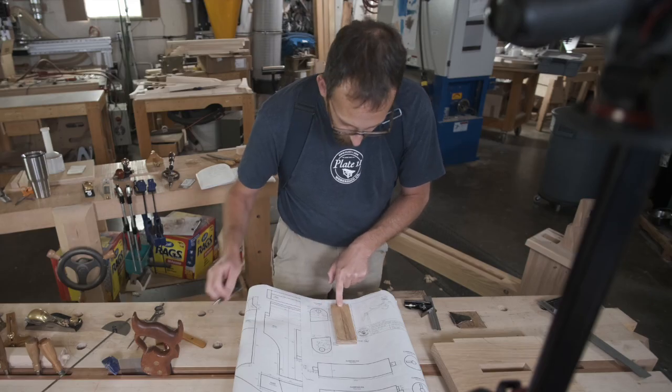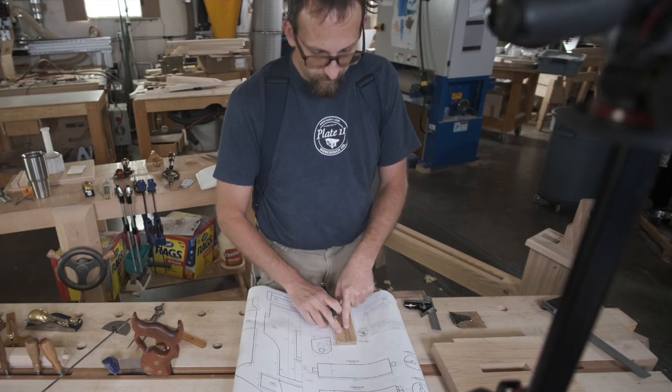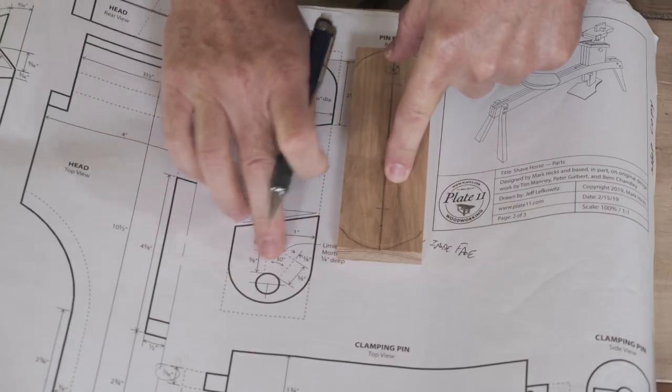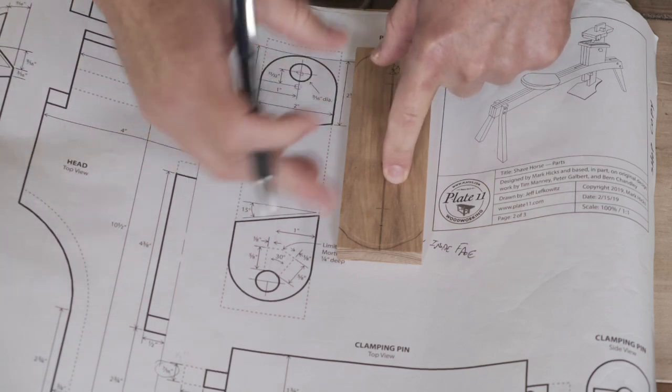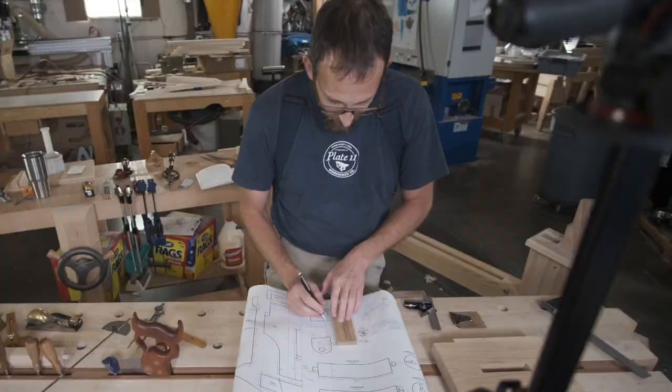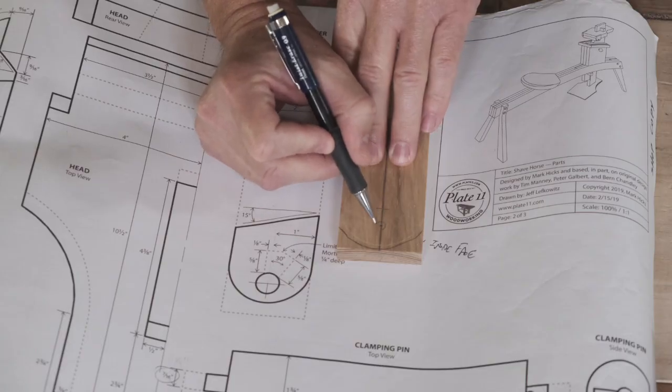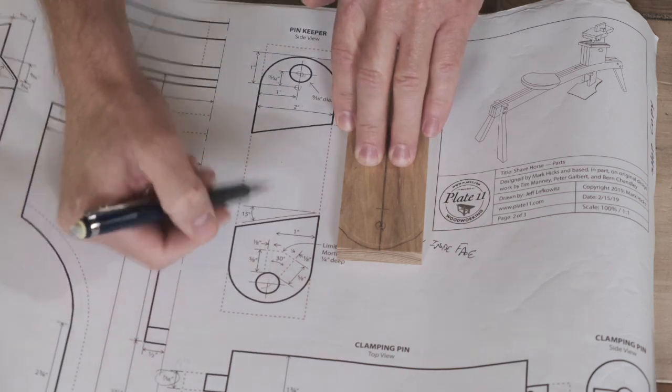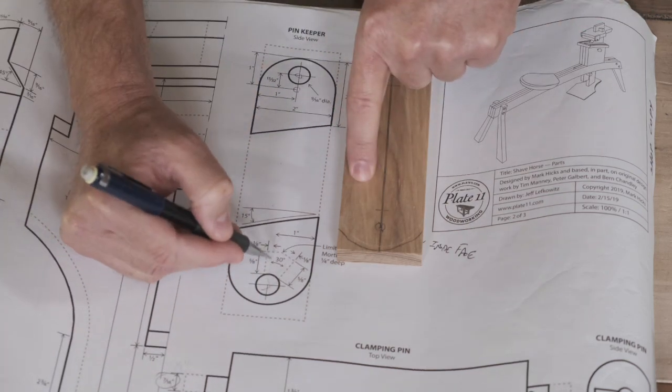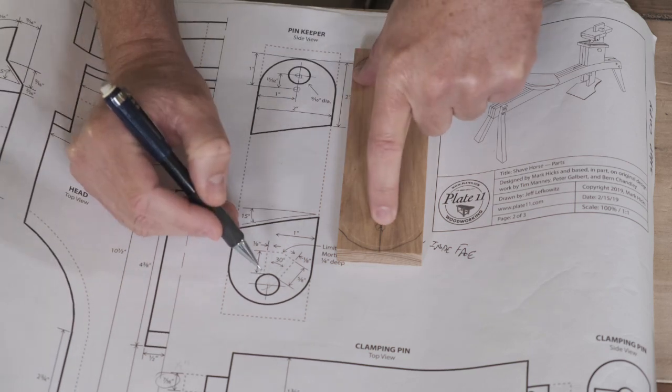That's basically the complete layout for the left side. All we have to do now is drill a hole right here. But on this end, we still have to lay out the mortise for the pinkeeper to rotate in, or the limiting pin to rotate inside of. This is where this drawing gets a little tricky. We've got our center line up.